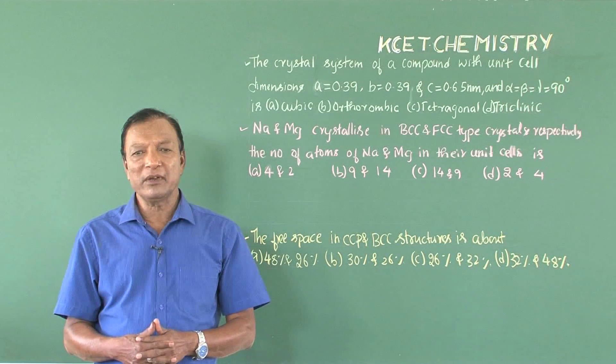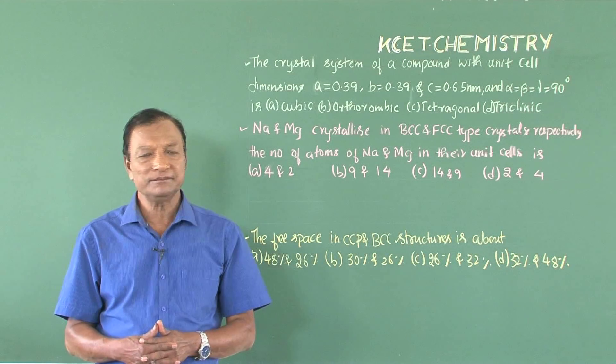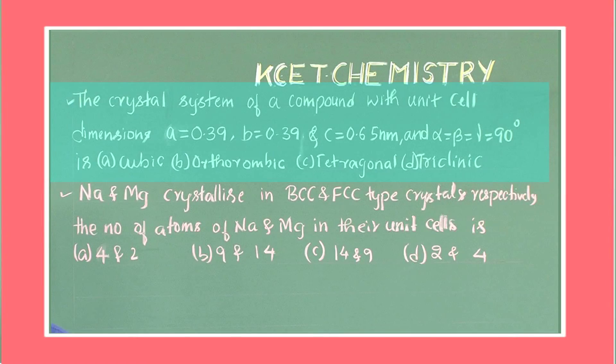Friends, we pick up with one more question: the crystal system of a compound with unit cell dimensions, make a note: a equal to 0.39, b equal to 0.39, c equal to 0.65 given in nanometers, and the angles alpha, beta, and gamma equal to 90 degrees.